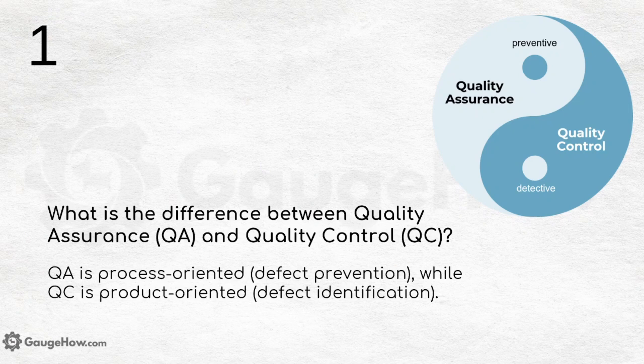What is the difference between quality assurance and quality control? This is a topic where many get confused. Use the shortcut QAP and QCD: quality assurance is always relative to preventive measures, while quality control is relative to detective measures. QA is process-oriented — that is defect prevention — while QC is product-oriented — that is defect identification.